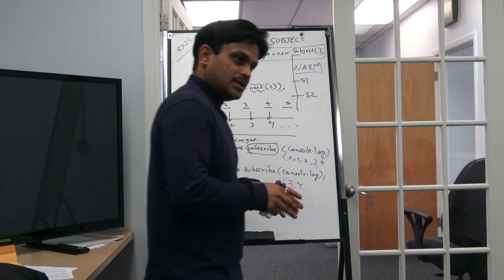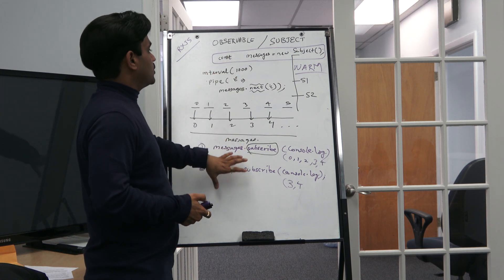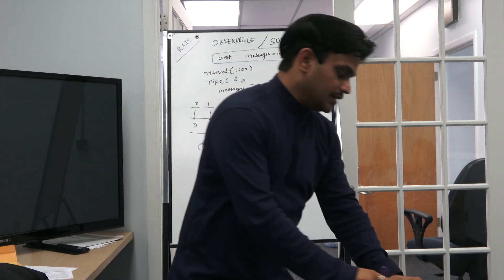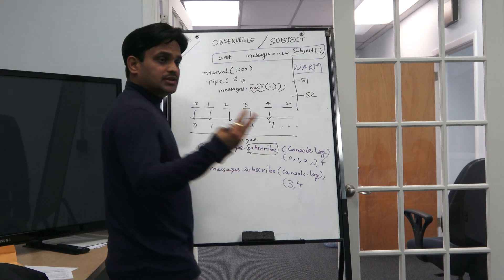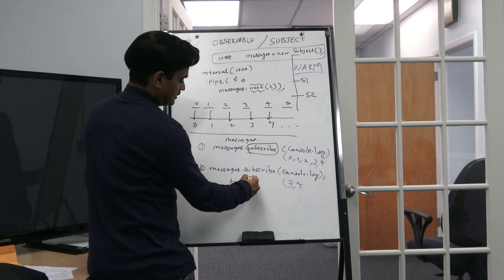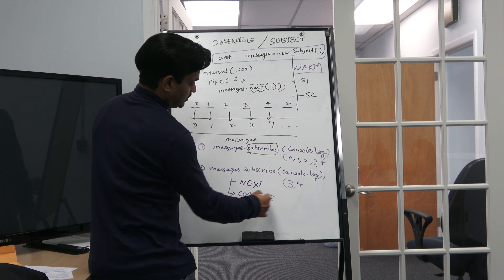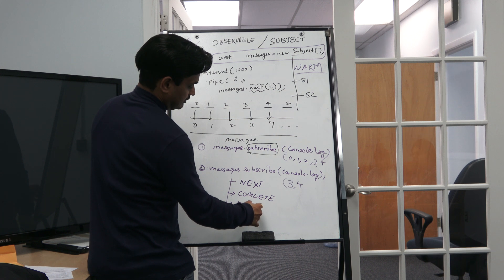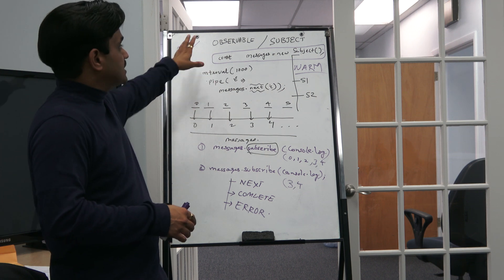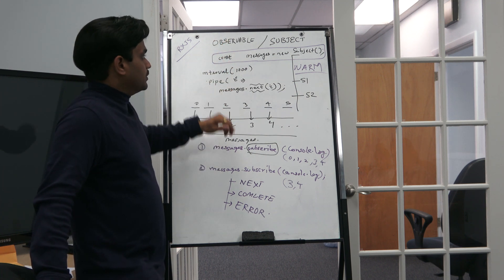These three concepts are the minimum you need to understand. There are more things — like what happens when you call `complete` — but this covers the basics. In Subject there are three methods: number one is `next`, number two is `complete`, and number three is `error`. Those will be explained in the next session, but this covers the basic difference between Observable and Subject.